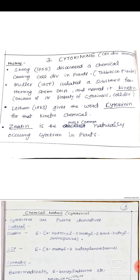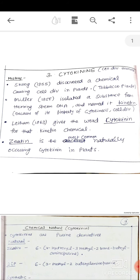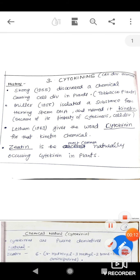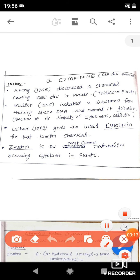Good evening students. In today's video we will discuss another plant hormone in the series of plant growth regulators. Today we will discuss the cytokinin hormone, that is the cell division hormone. It is the third hormone after auxin and gibberellin.